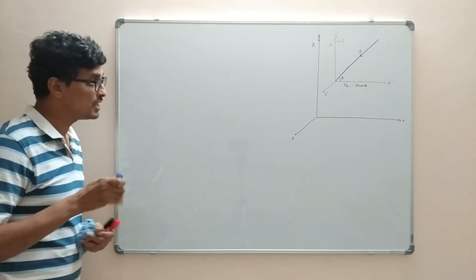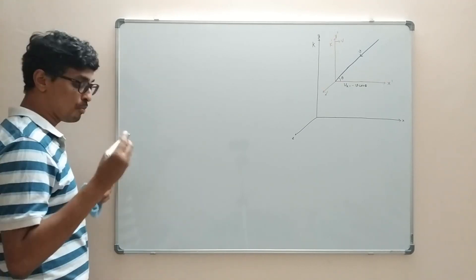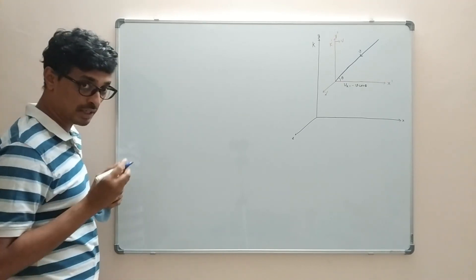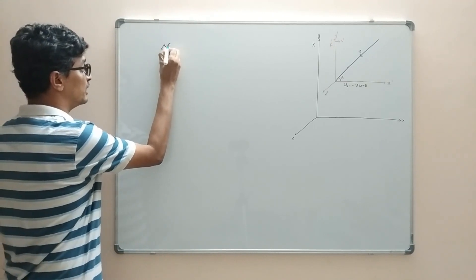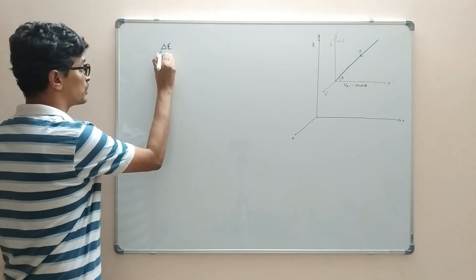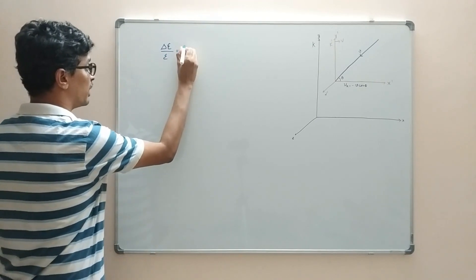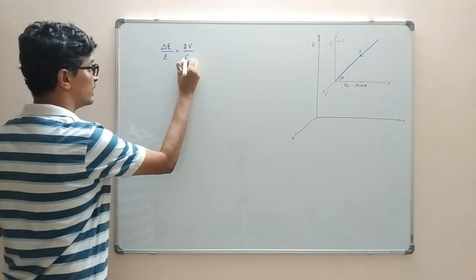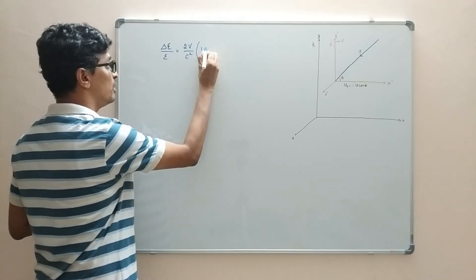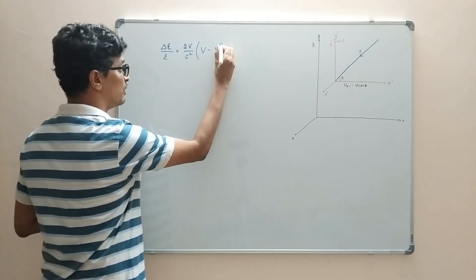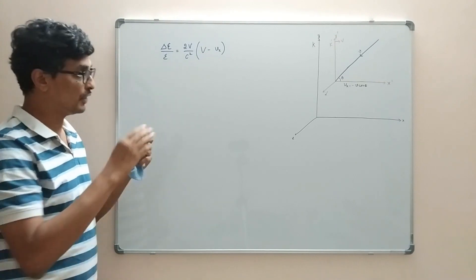Towards the end of the previous lecture, we derived an expression for the fractional increase in energy — Δε/ε — which is given by 2v/c² times (v minus v_x), where v_x is the x-component of the particle's velocity.